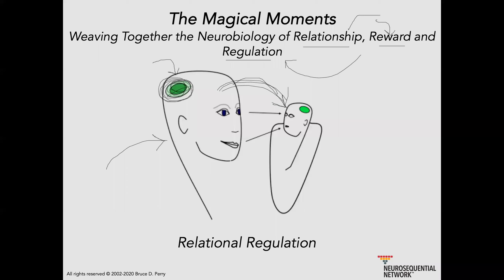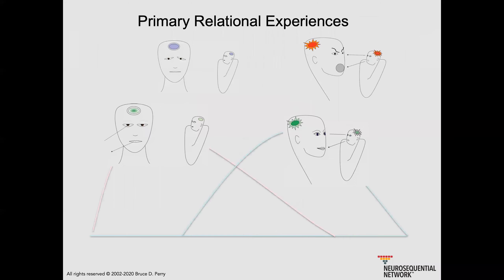And then the neural networks responsible for stress regulation and the stress response. Under normal, healthy conditions, these three systems get woven together and somebody grows up with the capability to be attentive, attuned, loving, and caring to other people.